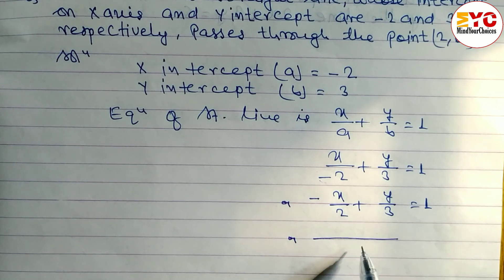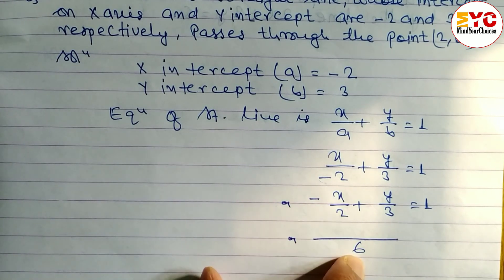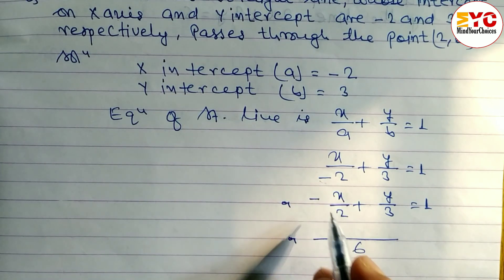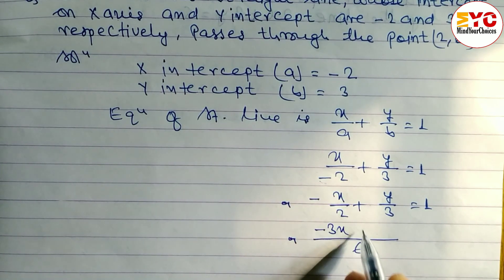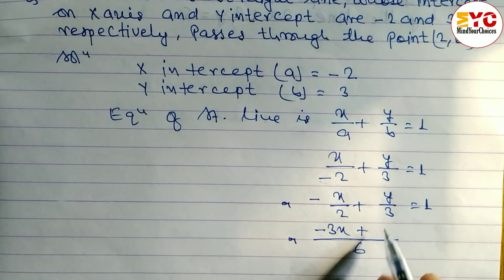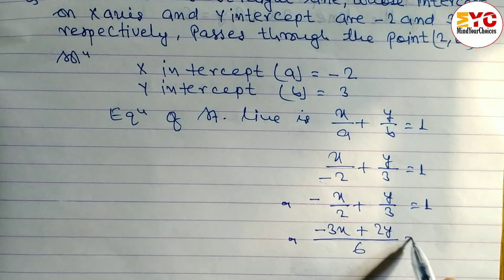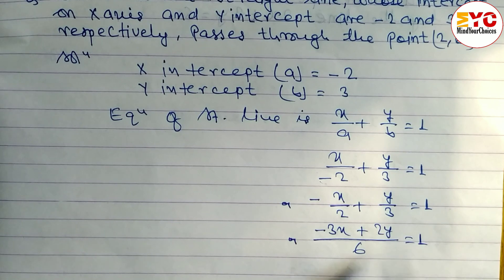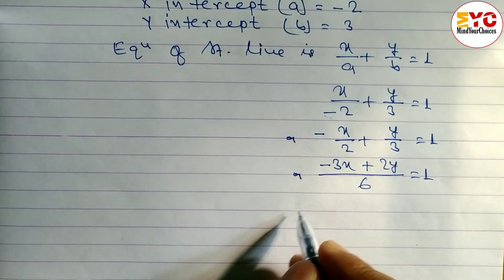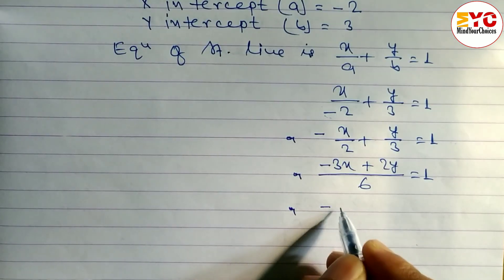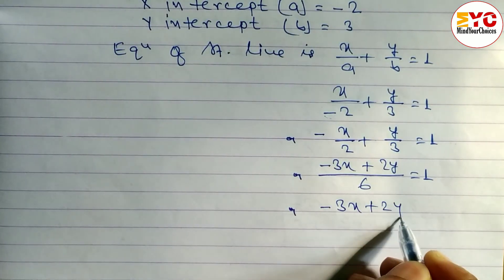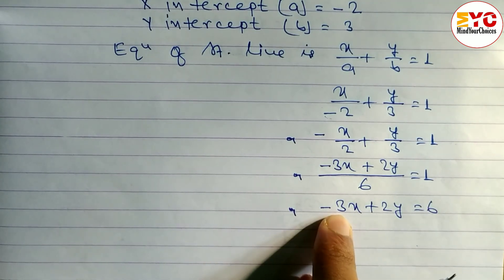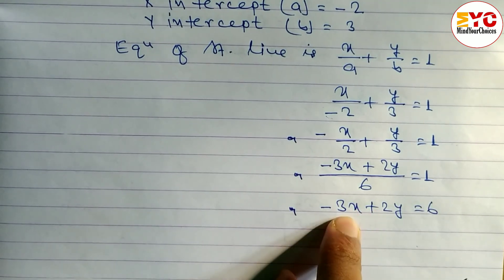To solve, we take the LCM of 2 and 3, which is 6. Dividing 6 by 2 gives 3, so 3 times (−x) gives −3x. Dividing 6 by 3 gives 2, so 2 times y gives 2y, equal to 1. Cross multiplying gives −3x + 2y = 6.